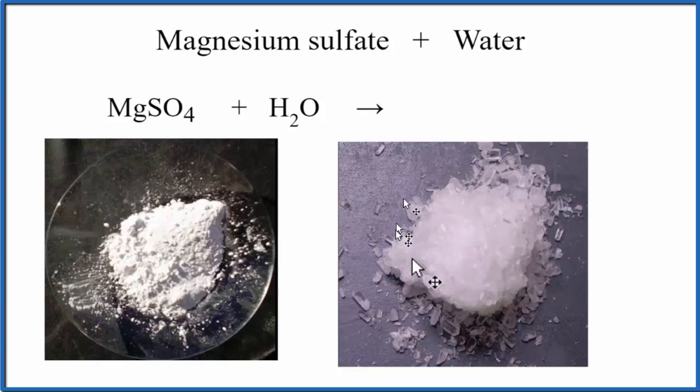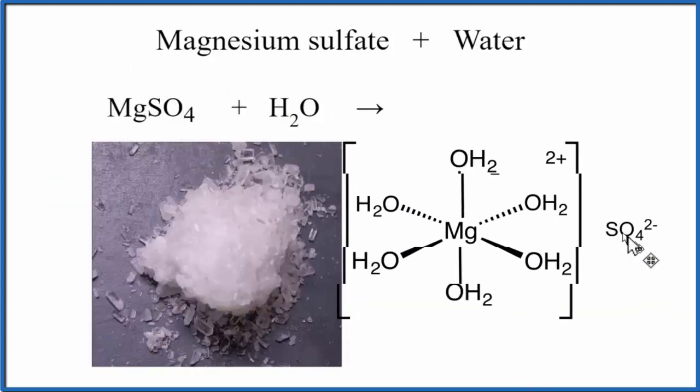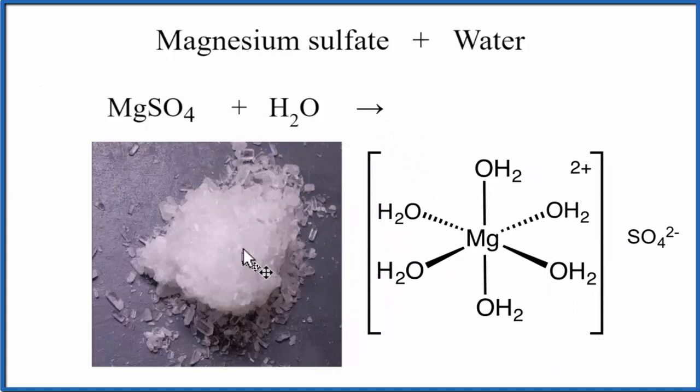So let's take a look at what that hexahydrate would look like. The magnesium sulfate hexahydrate would look like this. You'd have the magnesium ion, and then you'd have one, two, three, four, five, six water molecules around it, and then your sulfate ion out here.